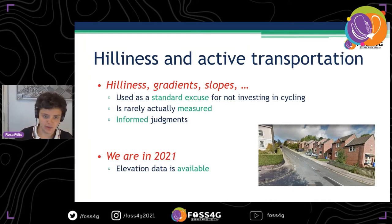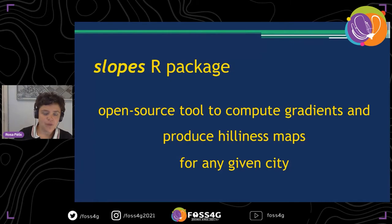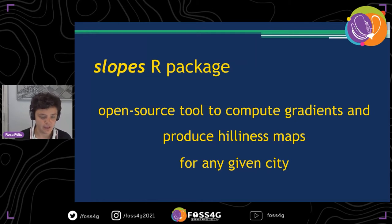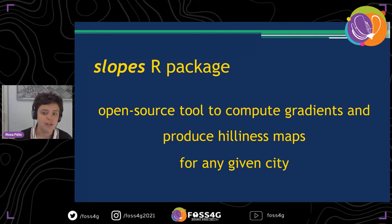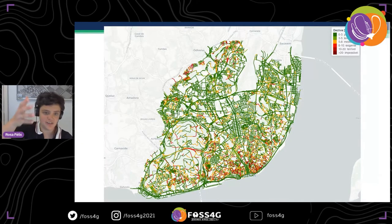We were working on this project called 'slopes', which is an R package — an open source tool to compute gradients and produce hilliness maps for any given city. It has the power to be reproducible. It has open data, open methods, and is based on free and open software, with the ability to be used with open data.